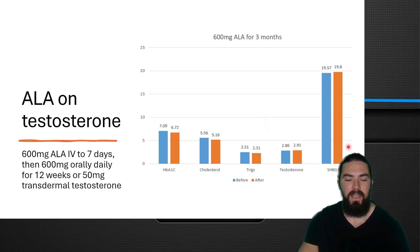Here's alpha lipoic acid and testosterone—this is a human study. They infused intravenously 600 milligrams of alpha lipoic acid for seven days, then used 600 milligrams of oral alpha lipoic acid daily for 12 weeks, or 50 milligrams of transdermal testosterone. HbA1c went down a little bit, cholesterol went down slightly, triglycerides went down slightly, testosterone went up very slightly by about 10 points. This was after three months of using alpha lipoic acid, and SHBG also went up very slightly. Clearly based on these results, alpha lipoic acid is not very good at increasing testosterone.